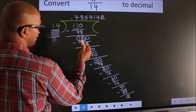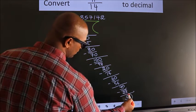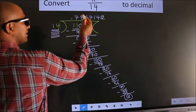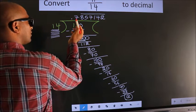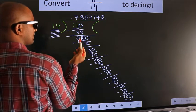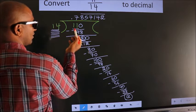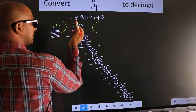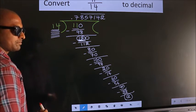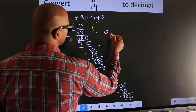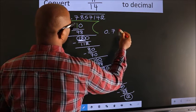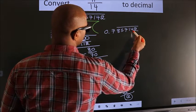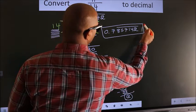We had 12 here earlier and we got 12 again — that means we get a bar on these repeating numbers. We don't get a bar on the first number, since after this step the number is repeated. Therefore our answer is 0.7857142 with a bar on these repeating digits.